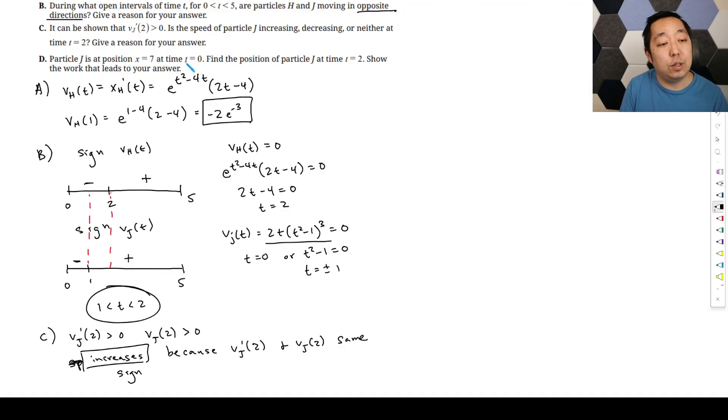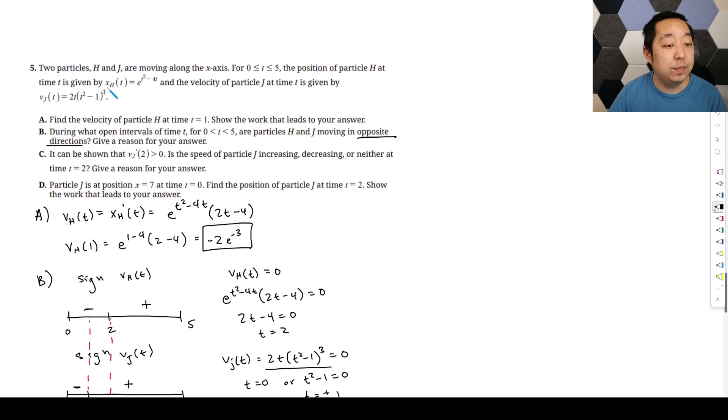Part D. Particle j is at position x equals 7 at t equals 0. Find the position at time t equals 2. Okay, so we know the position at t equals 0, and we have the velocity of j.